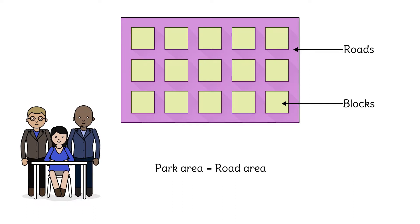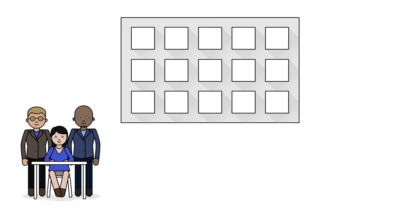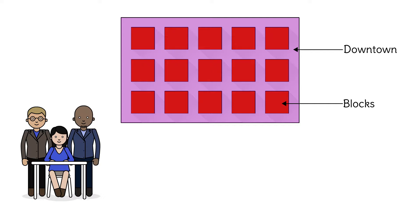To answer this question, the city council first needs to find the road area. To find the total road area, the plan is to calculate the area of the entire downtown and then subtract the area of the city blocks.